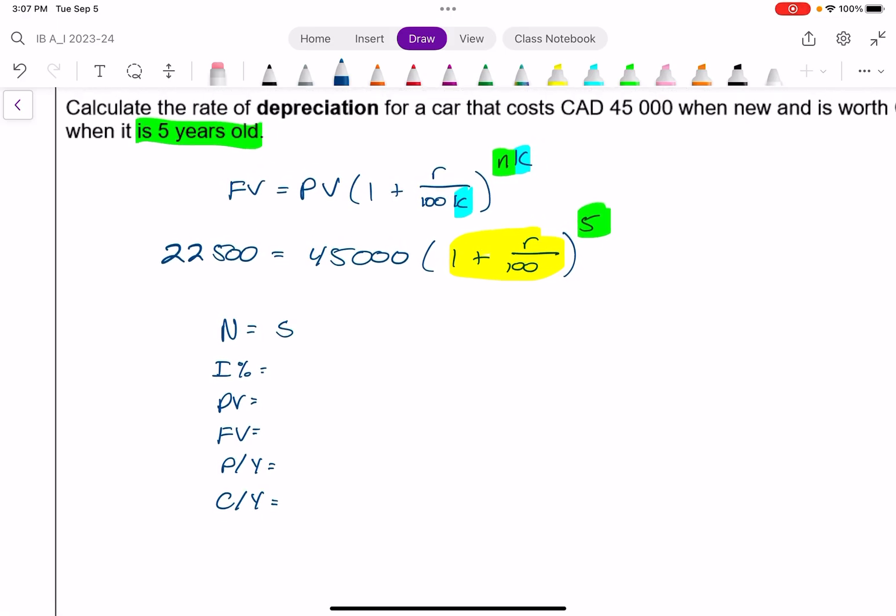And again, there's no compounding periods. I is what we're trying to find, so that's what we're trying to solve. It's not really an interest rate, as it is its value is going down, but essentially what we're trying to find. The present value, it is something we paid for, so you could imagine it being a positive number. It doesn't really matter as long as you make the future value an opposite sign. So if I'm going to make this positive 45,000, I should make this negative 22,500. Or you can make the present value negative and make the future value positive. It doesn't matter. I'm not making any payments, but it is compounding once a year because I'm trying to find out how much every year it's losing in value. So make these the same. And then solve for this.